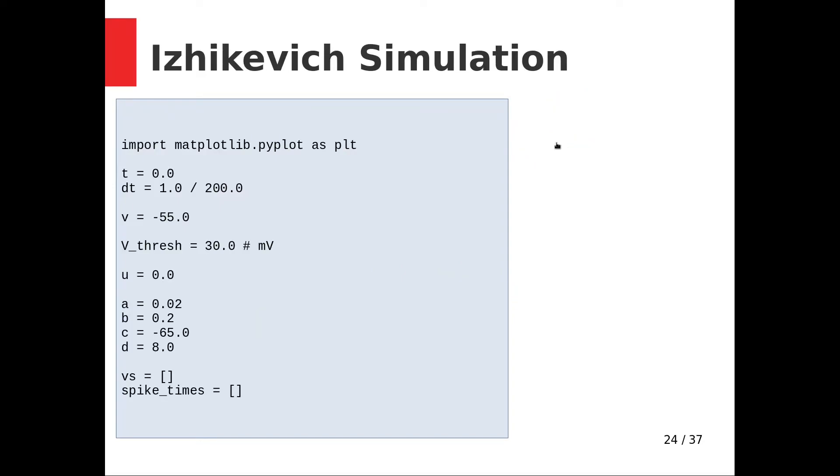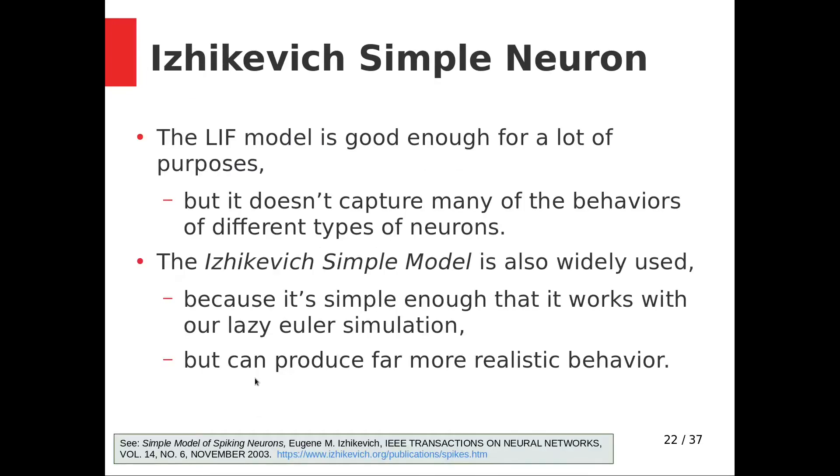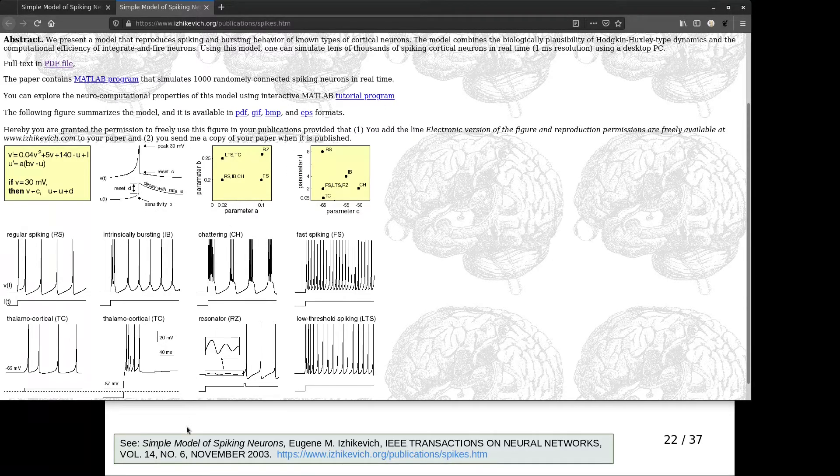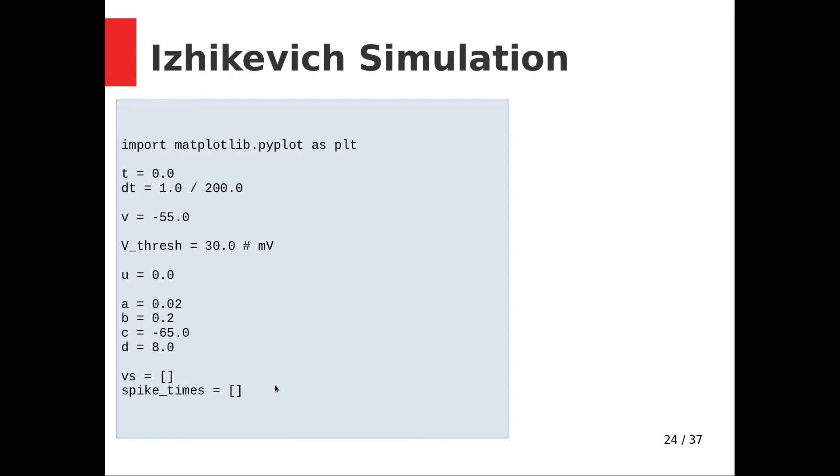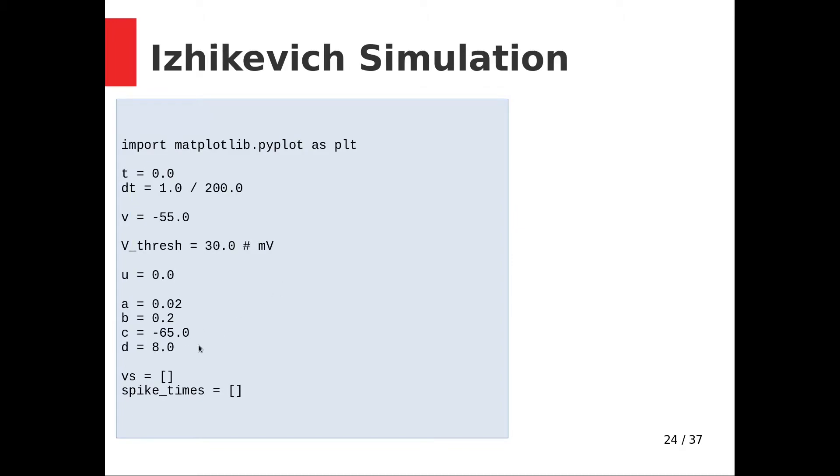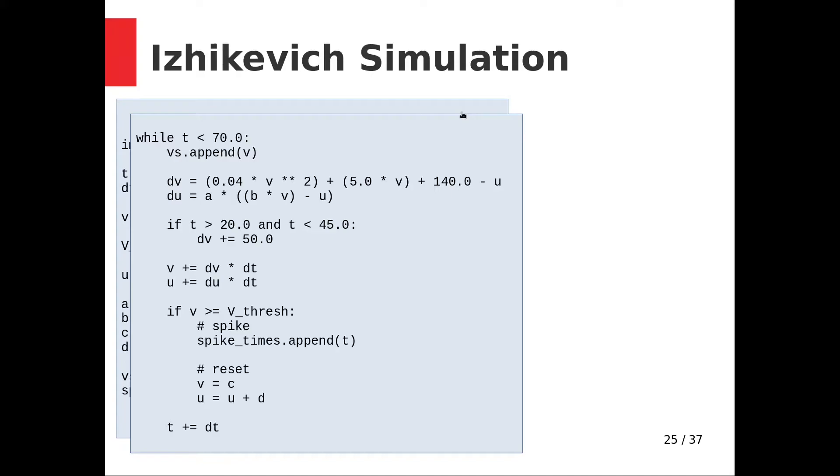And I picked some, I forget what he called it, but from like the basic sort of semi-generic pyramid neuron from his paper. That's not a pyramid neuron. What did he call it? There we go. This one. Regular spiking. So I picked the regular spiking numbers. And we see that like the main thing that has changed, so I picked the numbers for regular spiking for A, B, C, and D.